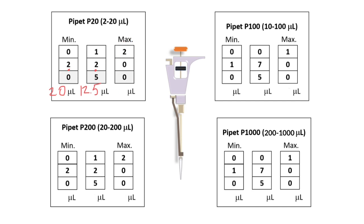Here, we don't have 200 microliters. Remember that we can only work with this micropipettor with volumes between 2 and 20 microliters. So again, we put a decimal point here, and we have 20 microliters.